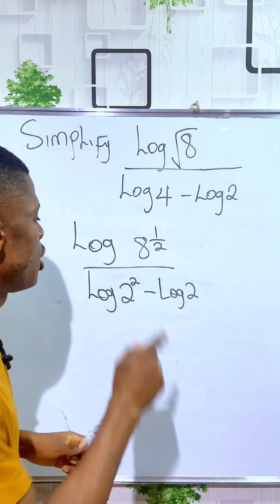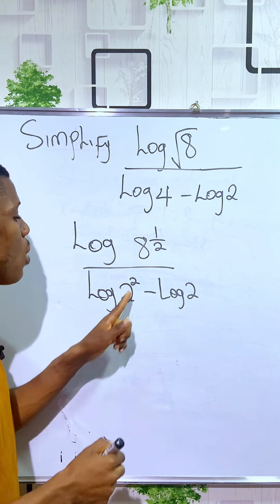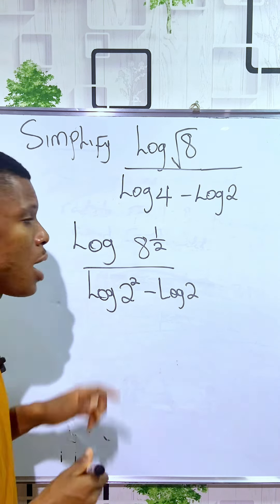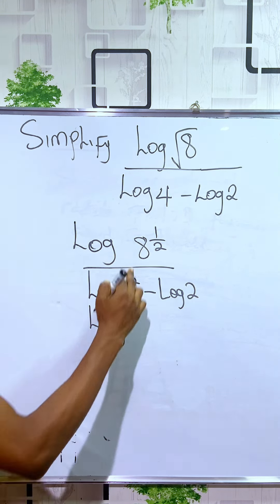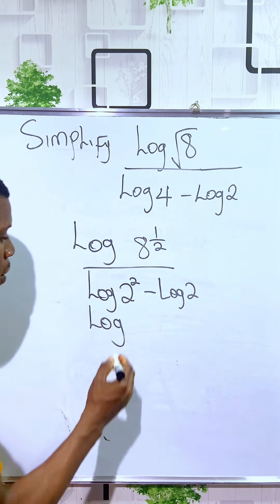On this note, you can see that we are free to multiply the power. We are free to multiply the powers to the logarithm. You have it to be log, but 8 can be seen as 2 times 2 times 2, which is 2 to the third power.